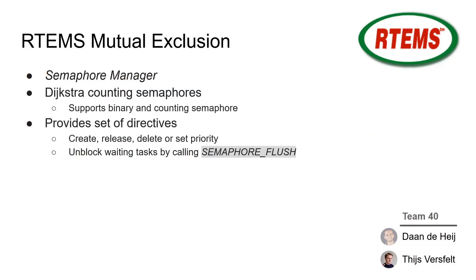Let's take a look at how mutual exclusion is handled in RTEMS. It is provided through the semaphore manager, which uses Dijkstra counting semaphores. It supports both binary and counting semaphores and provides a set of directives used to create, release, delete, or set the priority of a semaphore. There is also a directive called semaphore flush, which unblocks all tasks waiting on the semaphore.